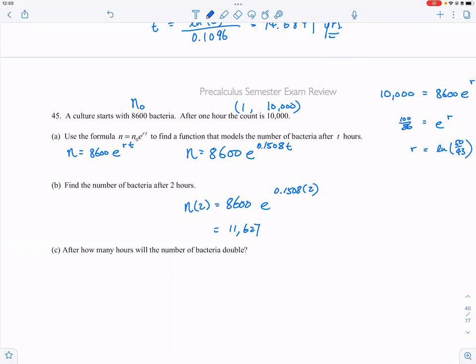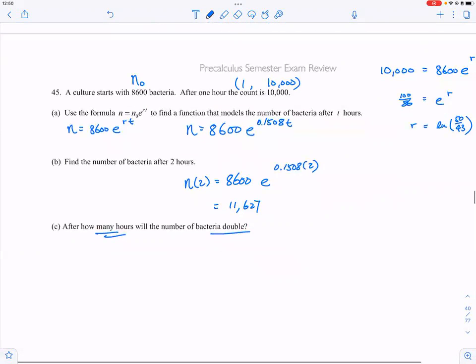After how many hours will the bacteria double? So that means there are two ways you can handle this. You can actually find out what n equals, 8600 times 2, which is 17,200, you can do that, or you can manipulate the equation first.